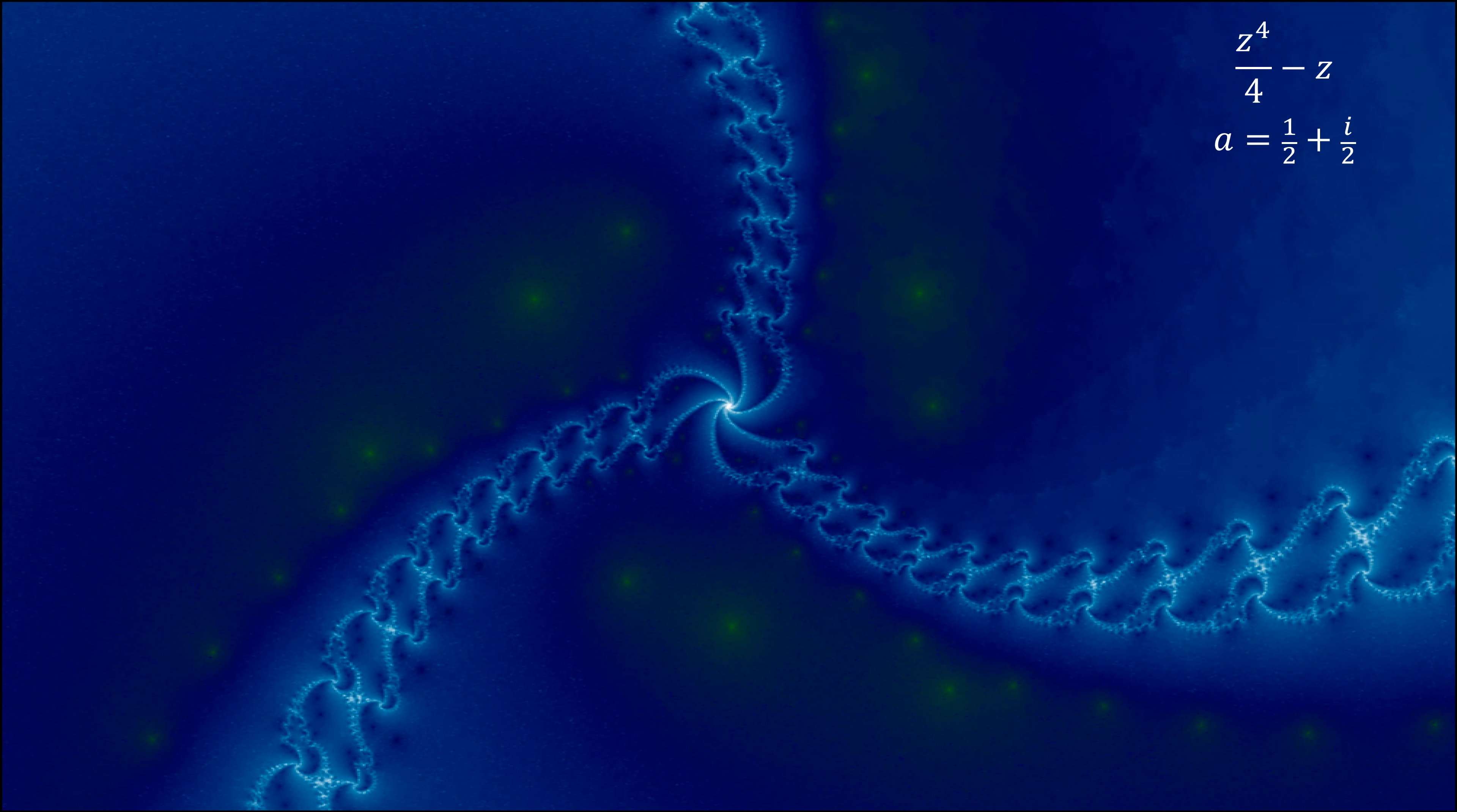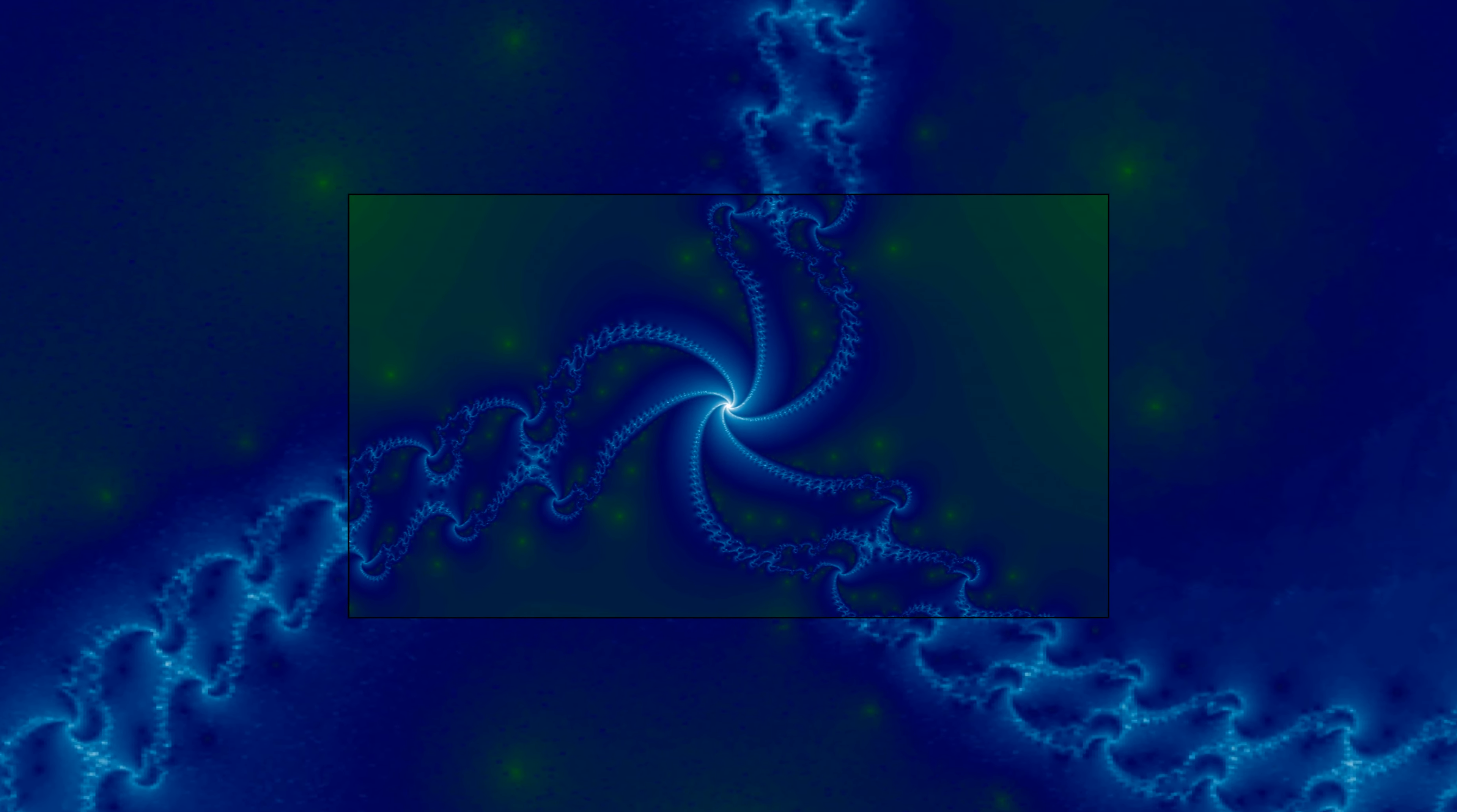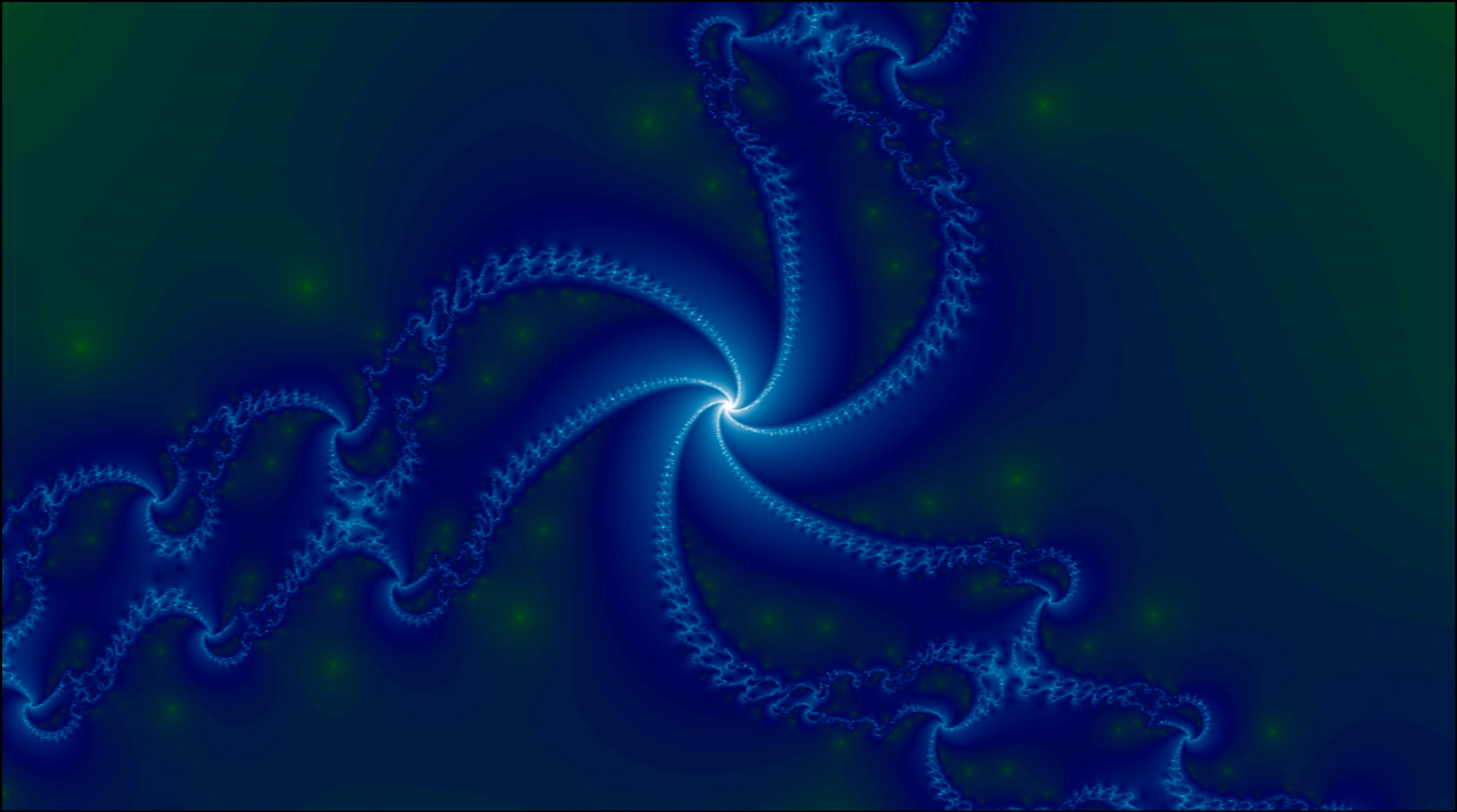It almost seems to have a sort of Mandelbrot effect in the middle. Let's alter it by adding the variable a in front, such as the value of one-half plus i over two. Giving a sort of pinwheel effect. Let's zoom in. Here you can clearly see the sorts of spirals within spirals.